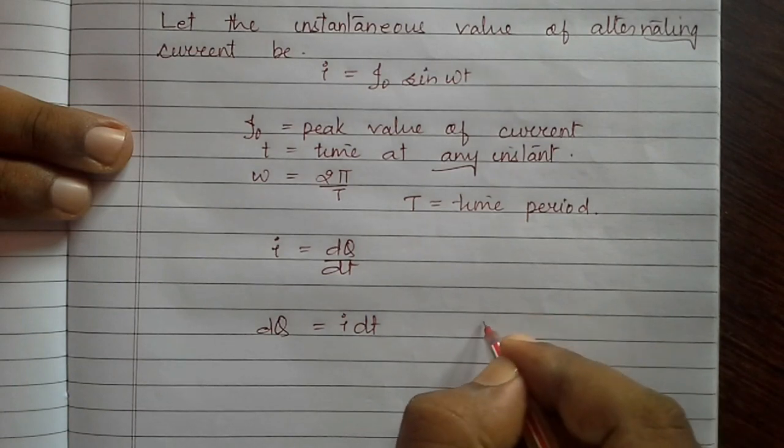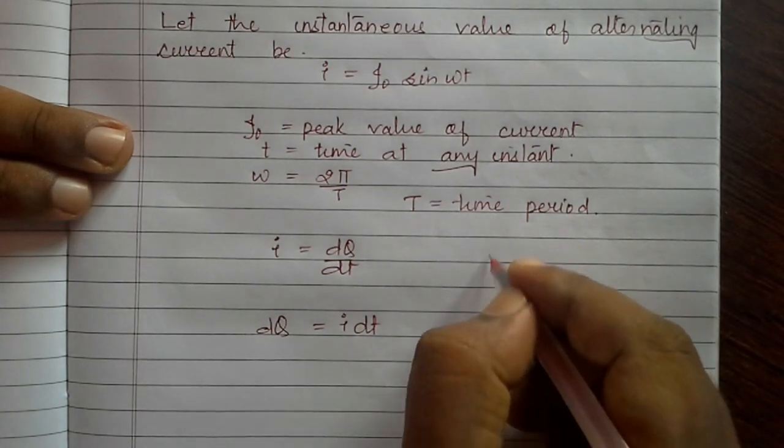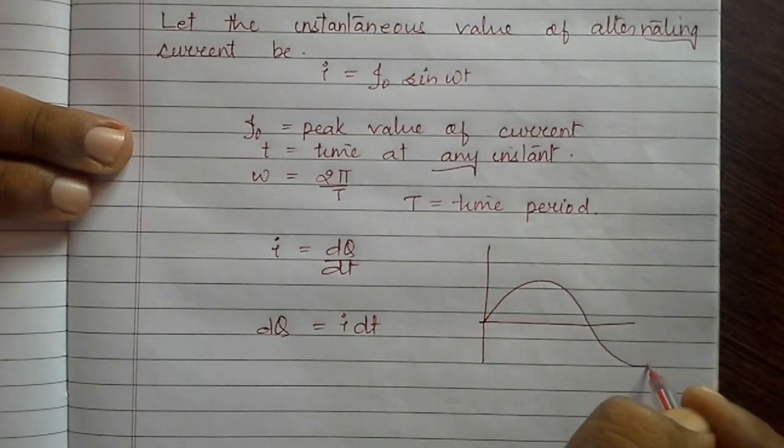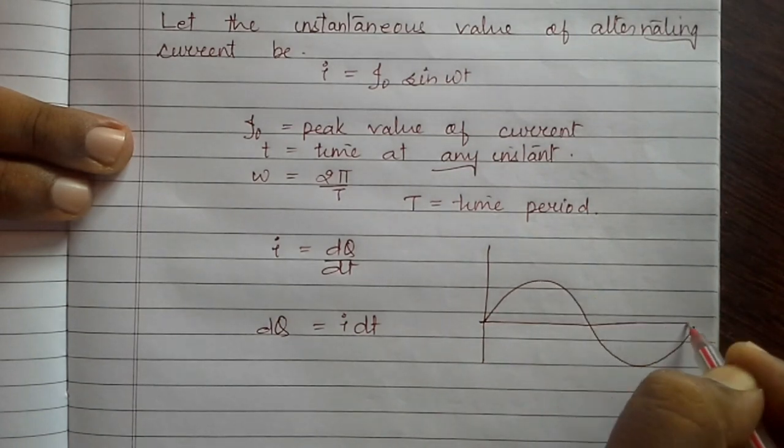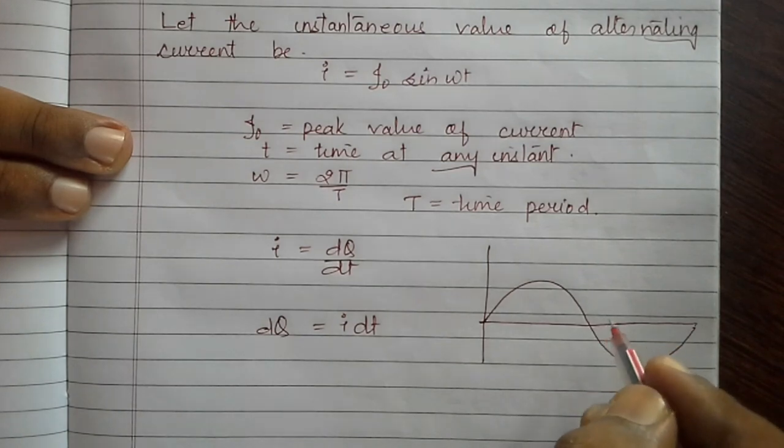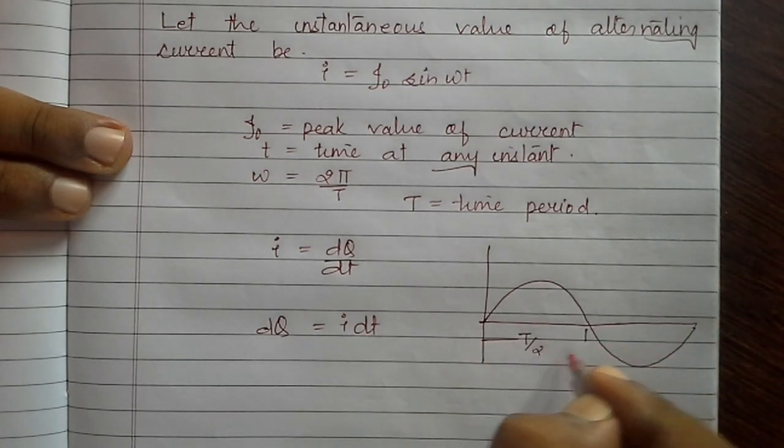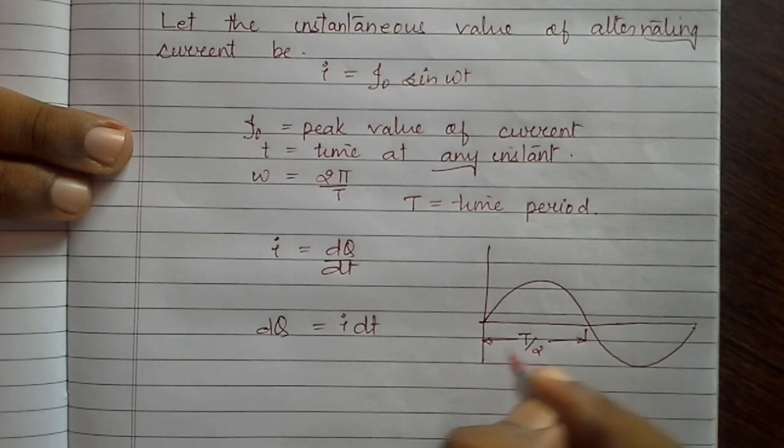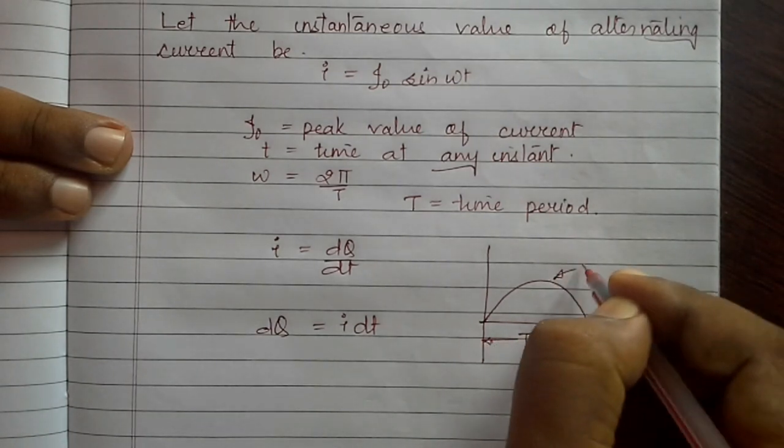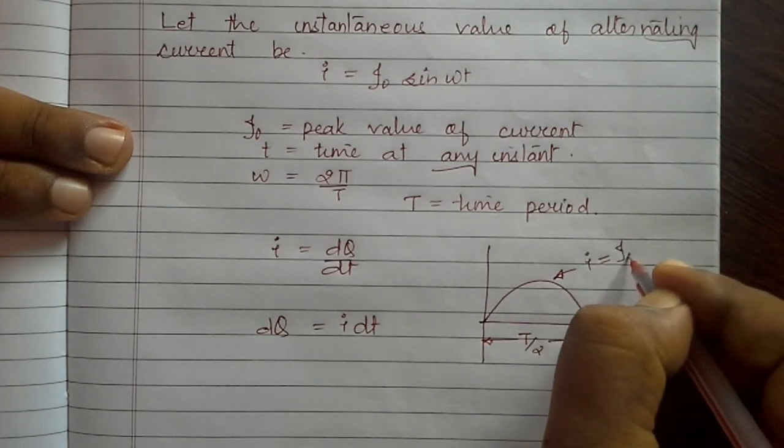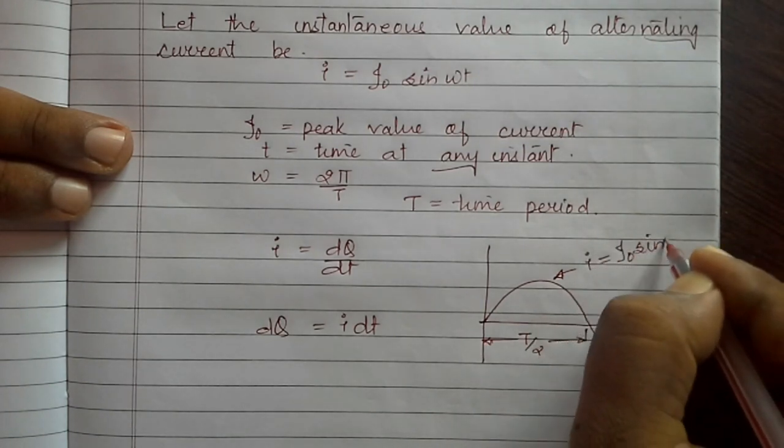If I plot a graph for the alternating current, this is the first cycle. What we want to find out is integration on it in half cycle, that is for time T by 2, and the graph for AC is i equals i0 sin omega t.